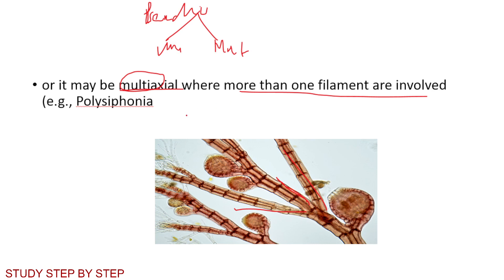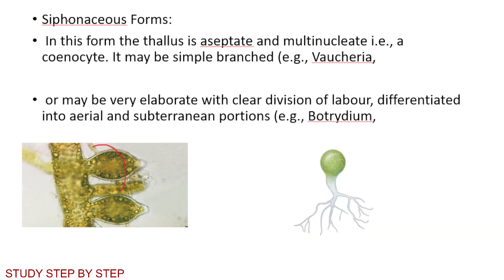Siphonaceous form: the thallus is aseptate — that is, without cross walls — and multinucleated, meaning coenocytic. It may be simply branched or may have a clear division of labor, being differentiated into aerial and subterranean portions. Example: Botrydium.